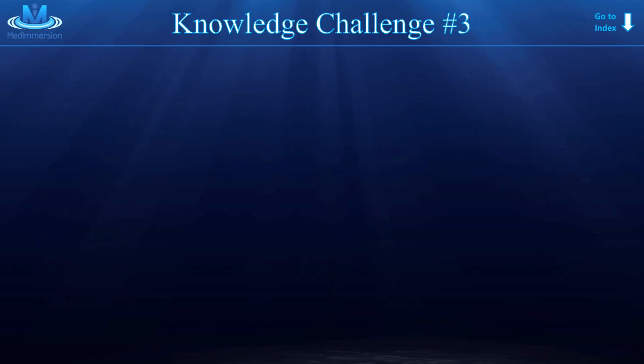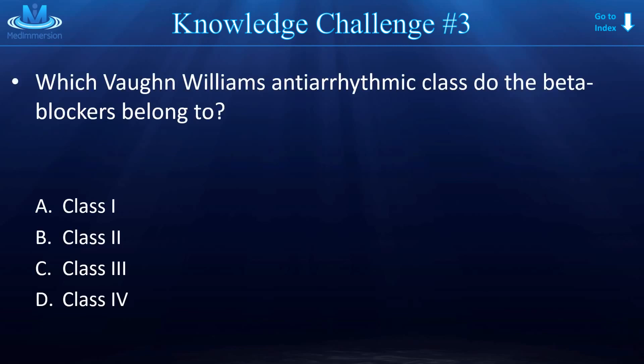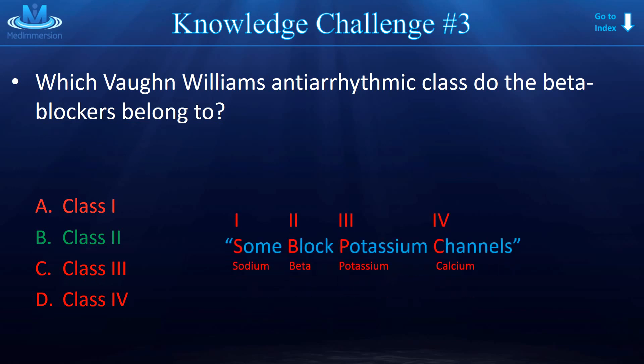Knowledge challenge number three: Which Vaughan Williams antiarrhythmic class do the beta blockers belong to? The answer is class two. Class one are the sodium channel blockers. Class three are the potassium channel blockers — if you don't know that after this lecture, I am a terrible teacher. And class four are the calcium channel blockers.